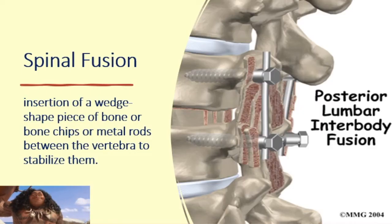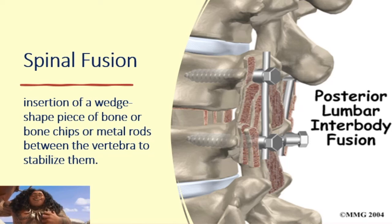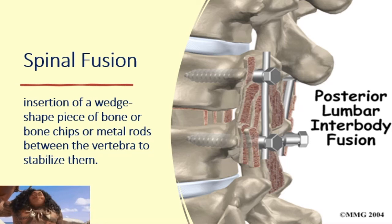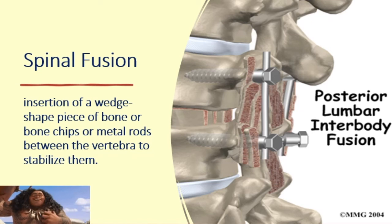Spinal fusion involves the insertion of a wedge-shaped piece of bone, bone chips, or metal rods between the vertebrae to stabilize them. Bone chips are inserted in the space between vertebrae, and the purpose is to stabilize and immobilize the vertebrae to prevent impingement and compression on spinal nerves. Essentially, spinal fusion fuses two vertebrae together.